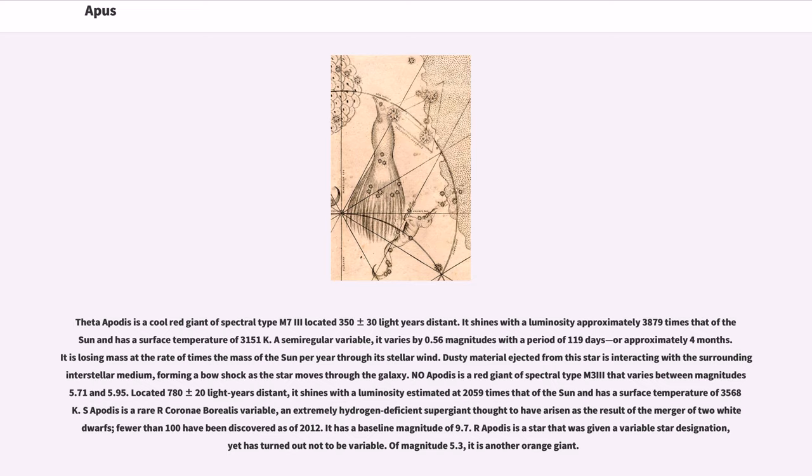S Apodis is a rare R Coronae Borealis variable, an extremely hydrogen-deficient supergiant thought to have arisen as the result of the merger of two white dwarfs. Fewer than 100 have been discovered as of 2012. It has a baseline magnitude of 9.7.